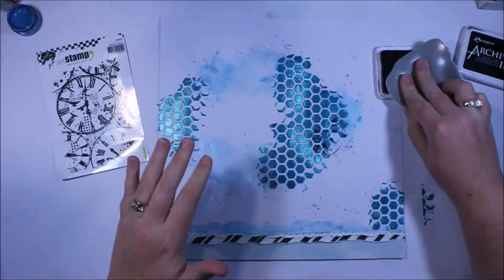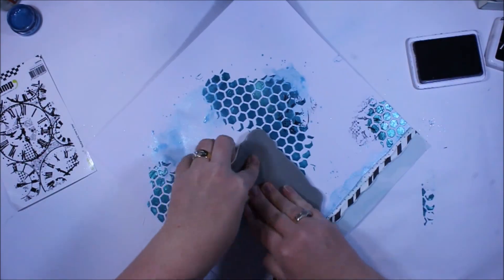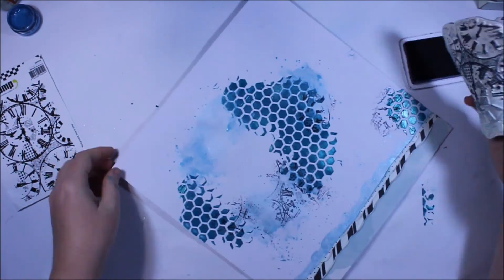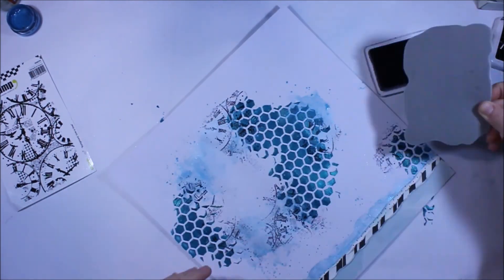This is the Carabelle Time to Time background stamp that I'm using just with black permanent ink, and this has turned out to be one of my favorite stamps.